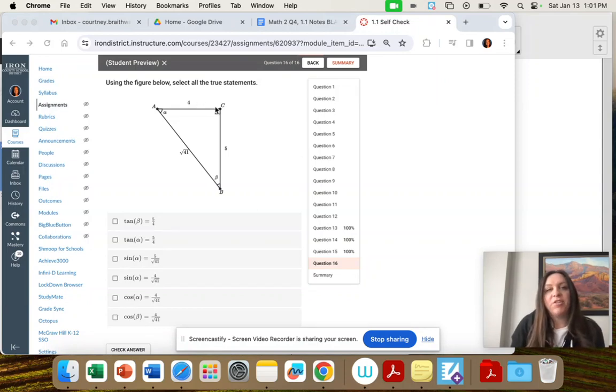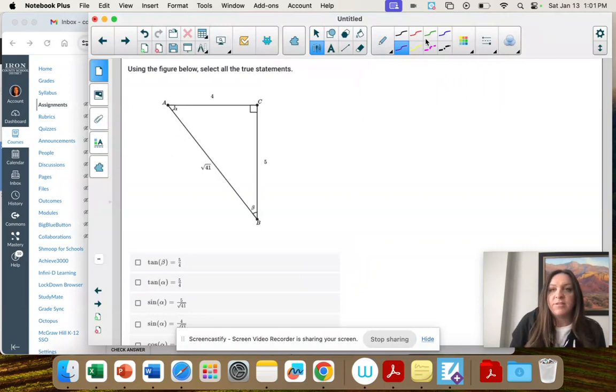Question 16: use the figure below to select all the true statements. I'm going to do what we did last time. I'm going to pick a reference angle. These are Greek letters. This is alpha, and that's beta.